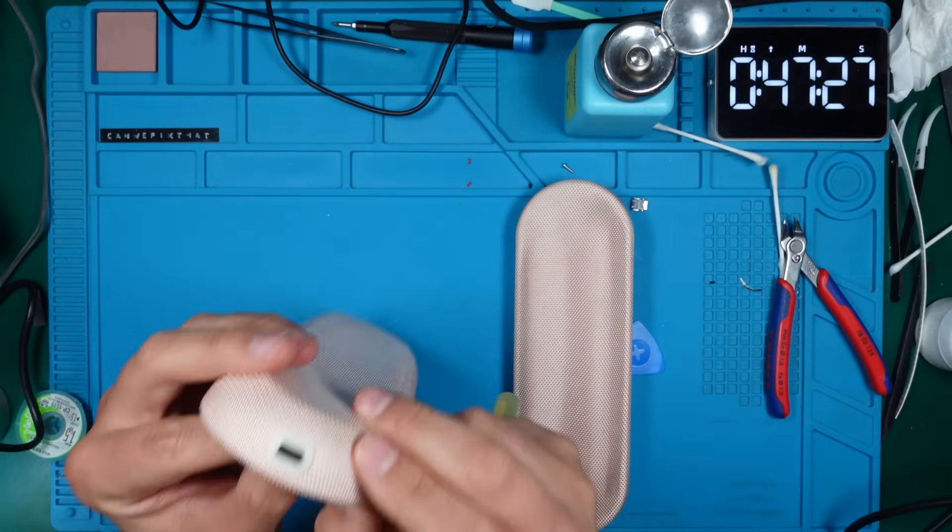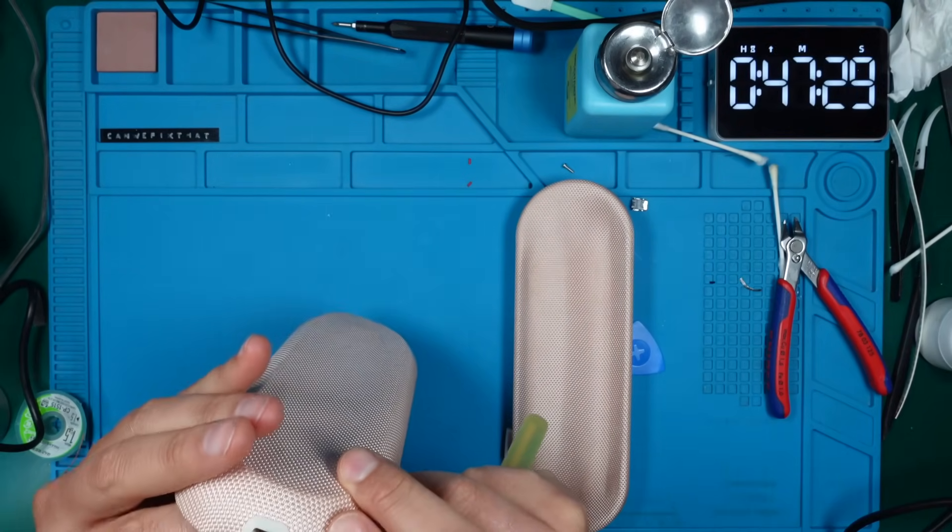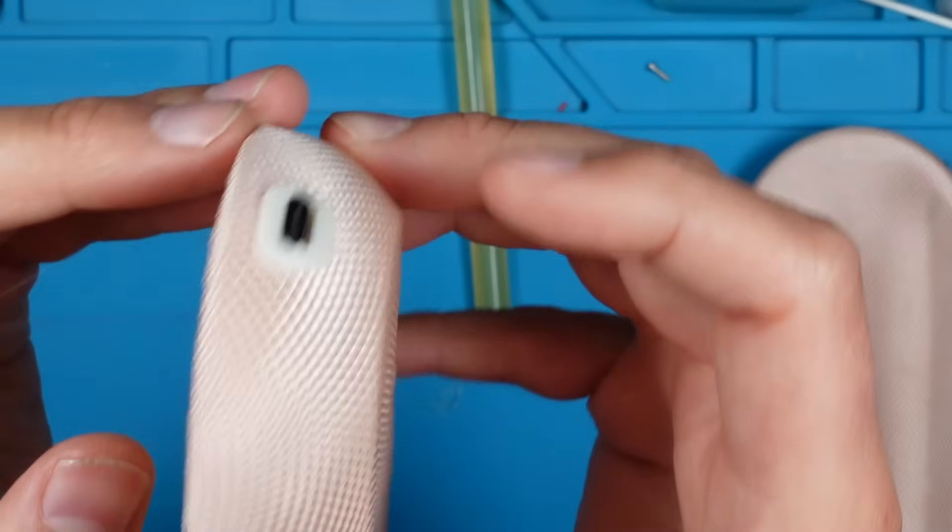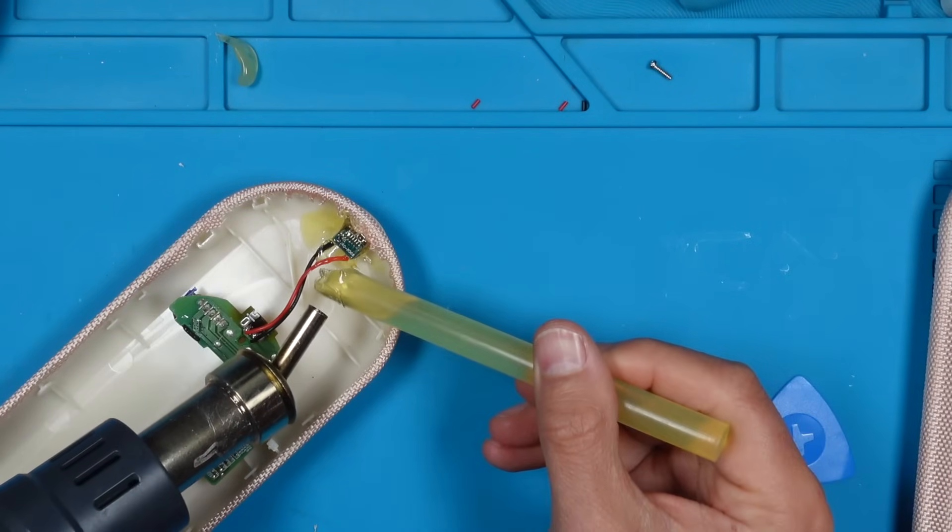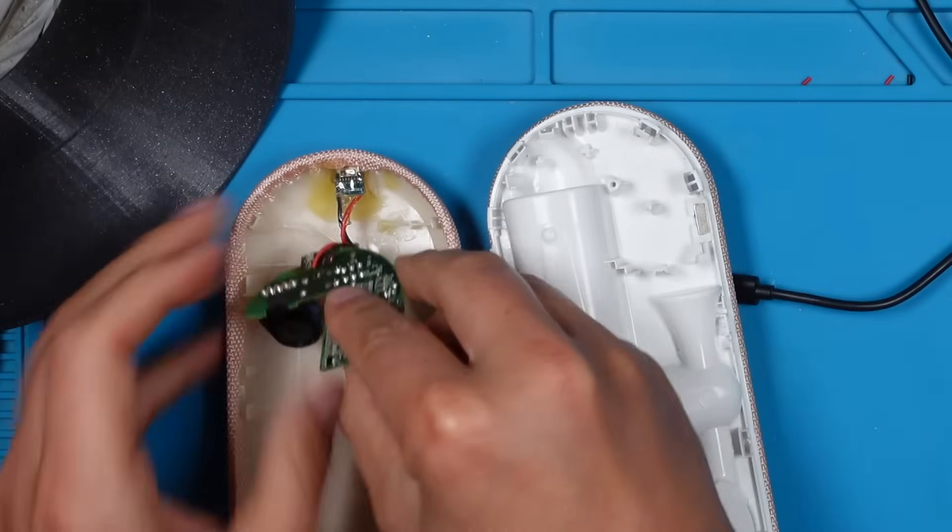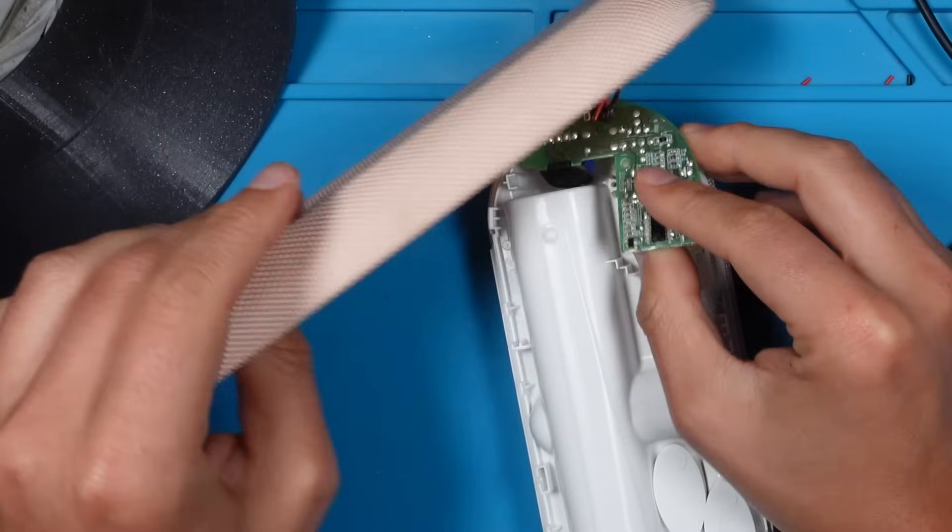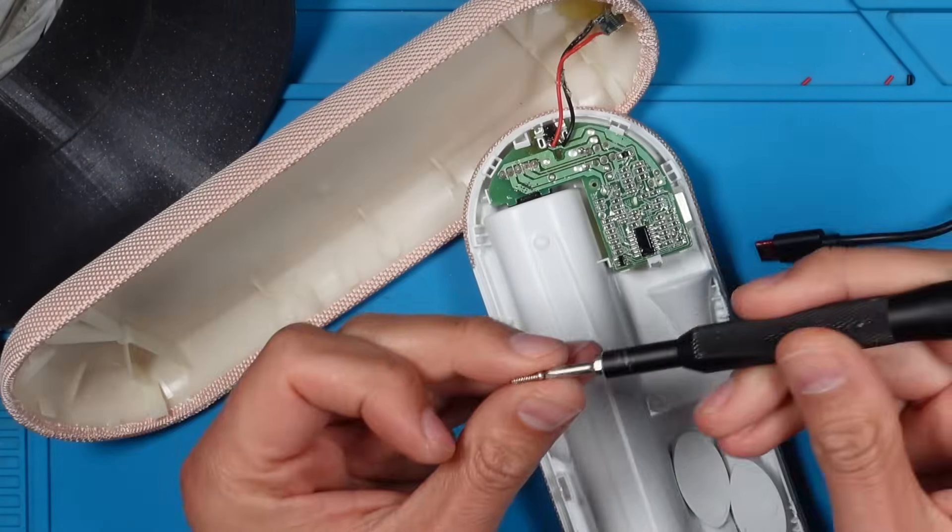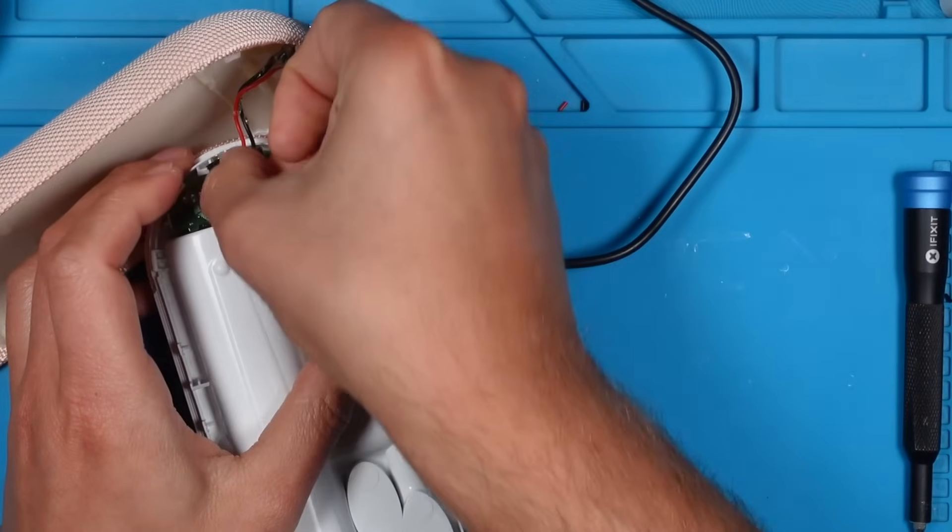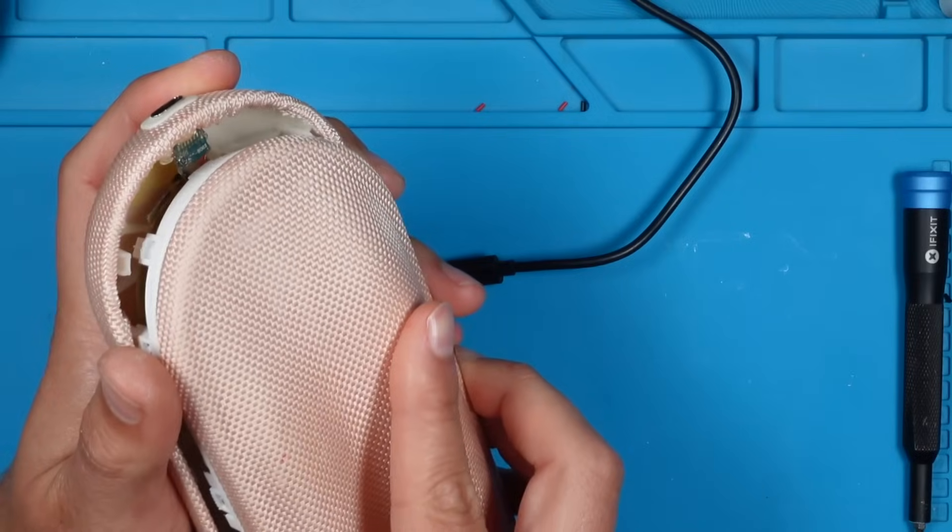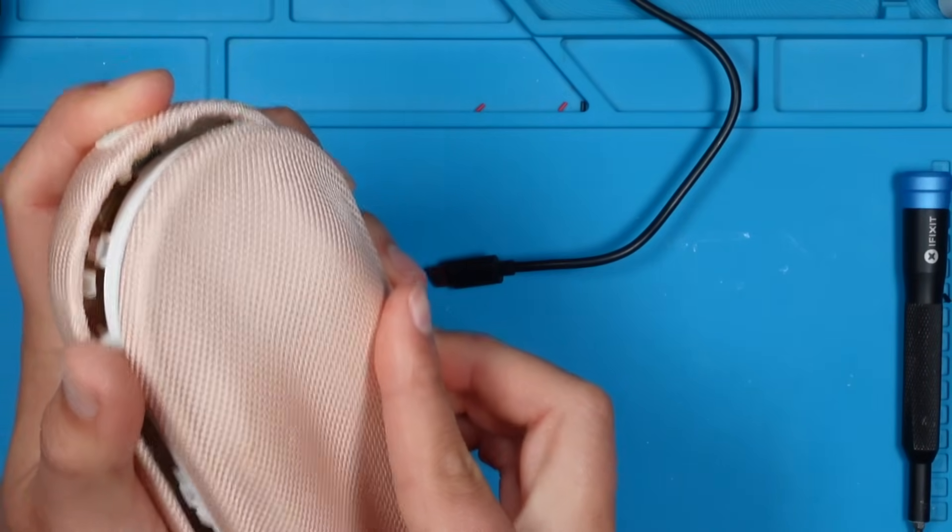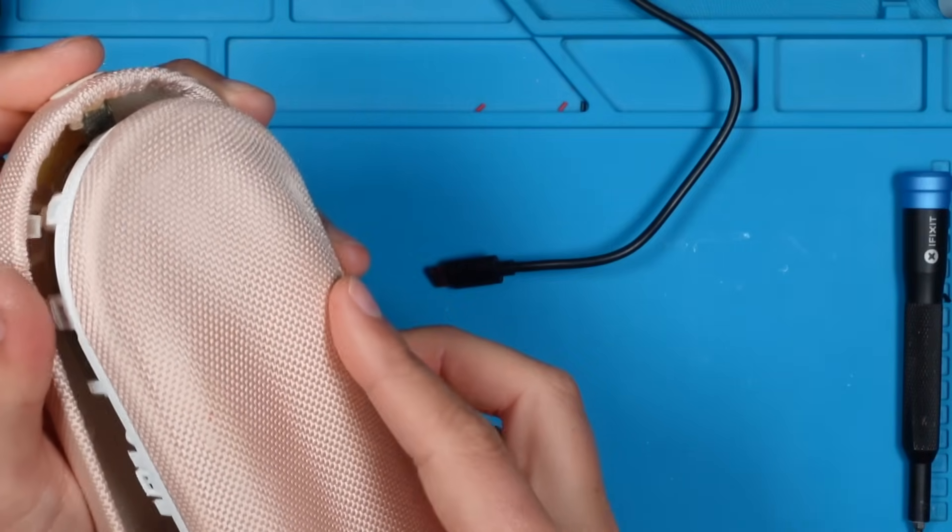To ensure it stays put, we will dab on a good bit of hot glue. The fit looks solid from the outside, but a bit more glue should seal the deal. The glue should be set by now. Let's try joining the two halves together. For added protection on this side, we will lay down a strip of insulation tape. I don't want to be a buzzkill, but it seems like all the hot glue is taking up crucial space, preventing us from properly closing the case.